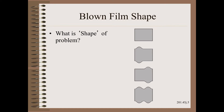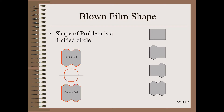Recall that the shape tool will always be used in baggy web troubleshooting. So, the question is: what is the shape of the problem? You may pause the clip if you wish to think about this for a moment. The shape of the problem is a four-sided bubble. In other words, problems can occur in any one of four potentially defective parts of the bubble and in any combination, producing the four patterns observed in the parent rolls.